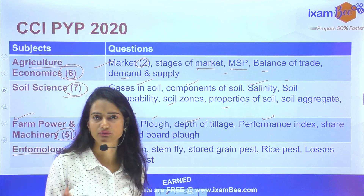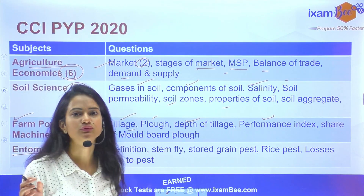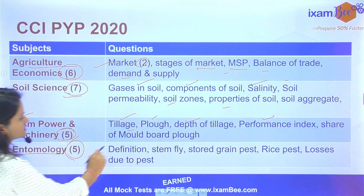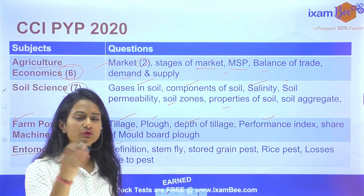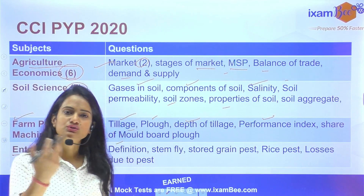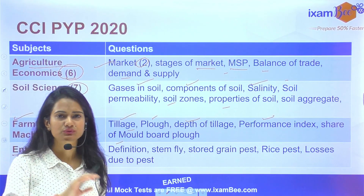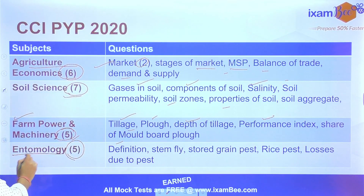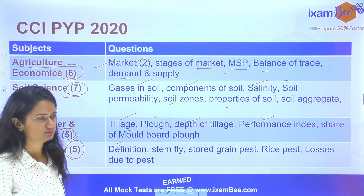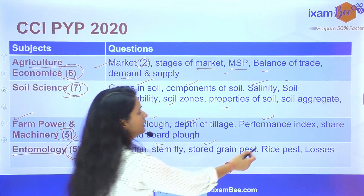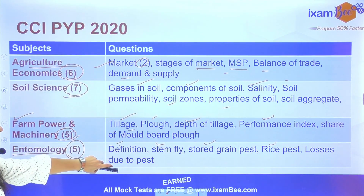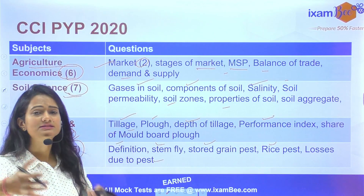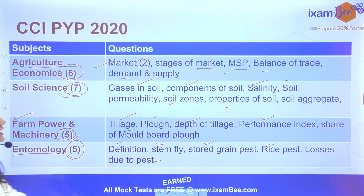Entomology important part hold karta hai — cotton mein bhi bohot saare insects aur pests hote hai, toh entomology important hai. Entomology se 5 questions the. Isme basic definitions thi — agar aap question paper dekho ge, kuch toh bahut basic se questions hain, easy questions hain. Ek-do questions humesh aise hote hai jo difficult aate hai. Ek toh definition ka question tha — entomology ki definition. Phir stem fly ka question tha, stored grain pests ka tha, rice ke pests pe ek question tha. Losses due to pests — total kitna loss hota hai, economic loss hota hai, kaisa loss hota hai — uss type ka question bhi tha.